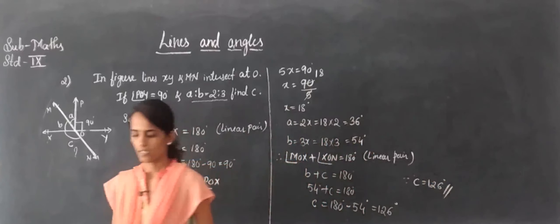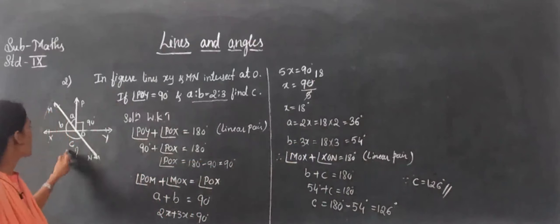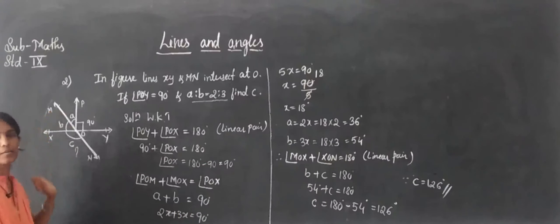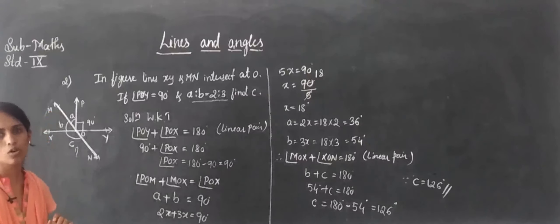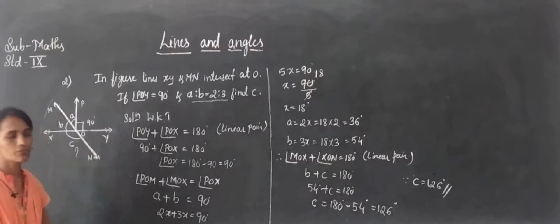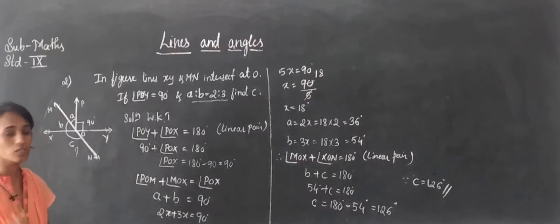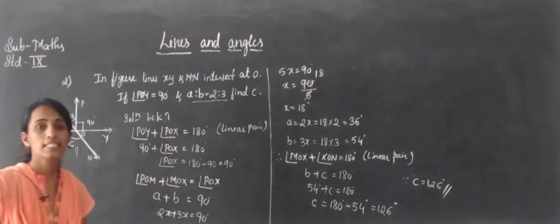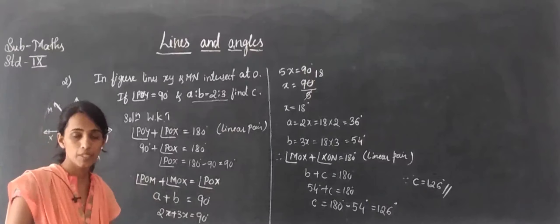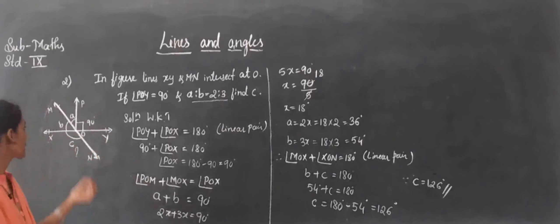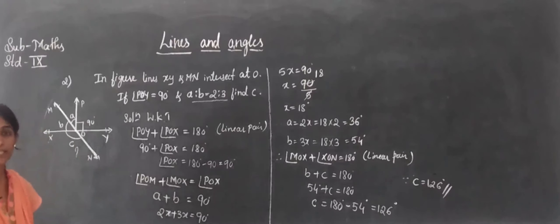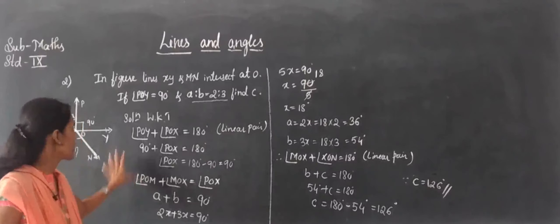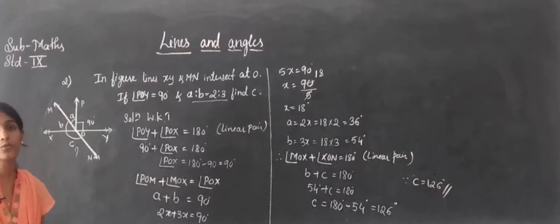So this is the answer. To find angle C, we first needed to find angles A and B. If you know the basic concepts — linear pairs sum to 180 degrees and complementary angles sum to 90 degrees — these types of examples are very easy to solve.